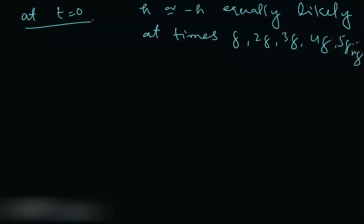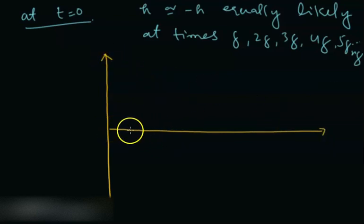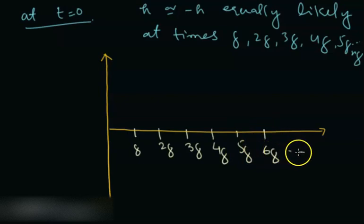So what is going on basically, what does this mean? Let's try it here. Your time interval is partitioned like delta, 2 delta, 3 delta, 4 delta, 5 delta, 6 delta, and so on. This is your time axis.